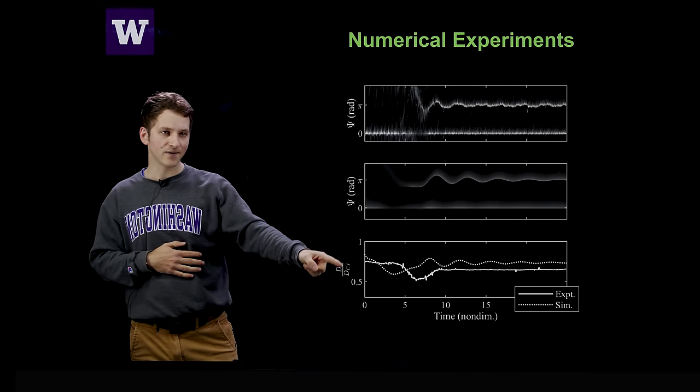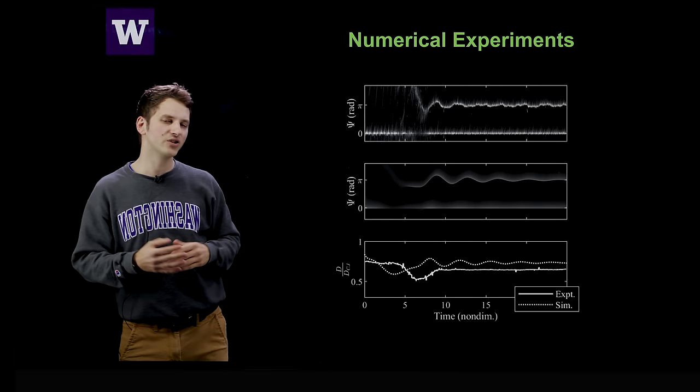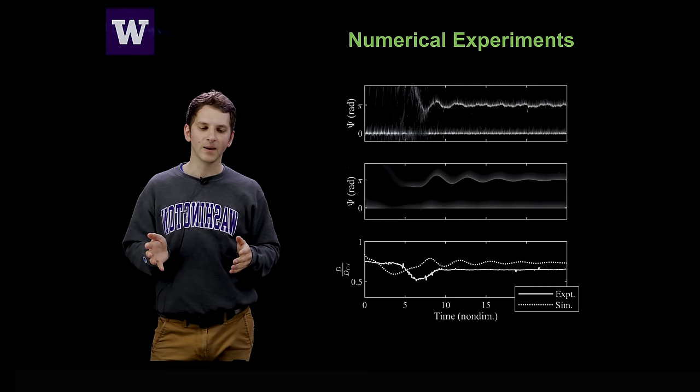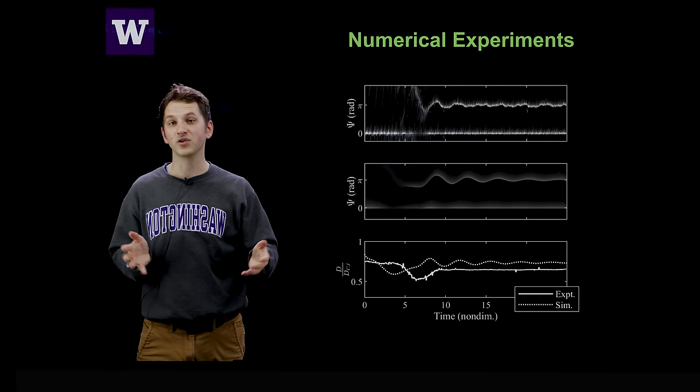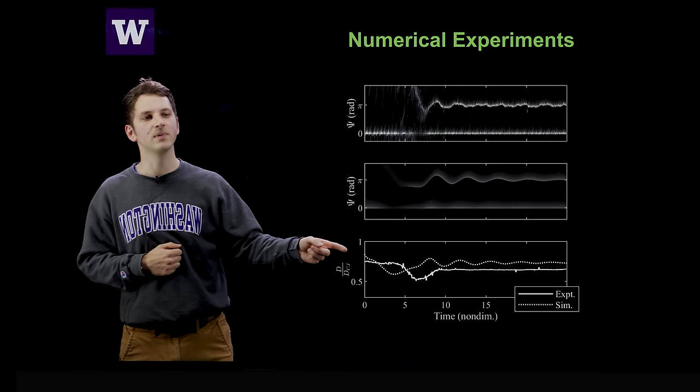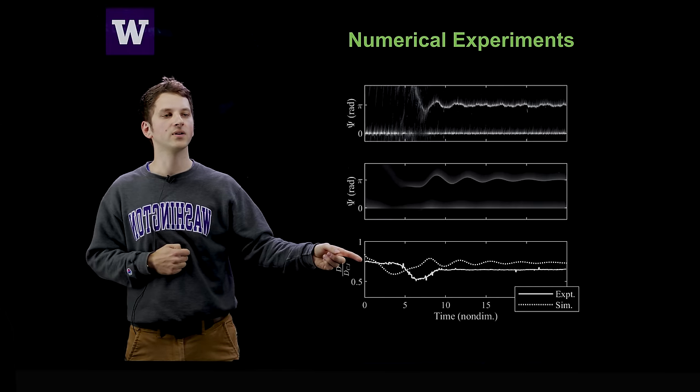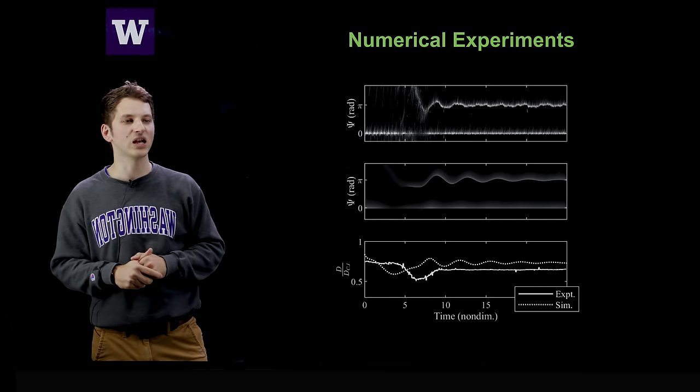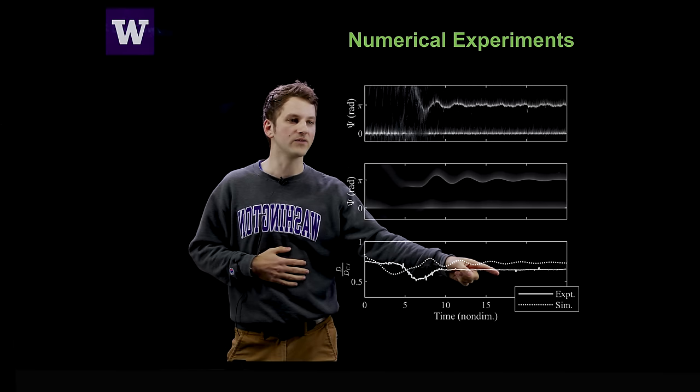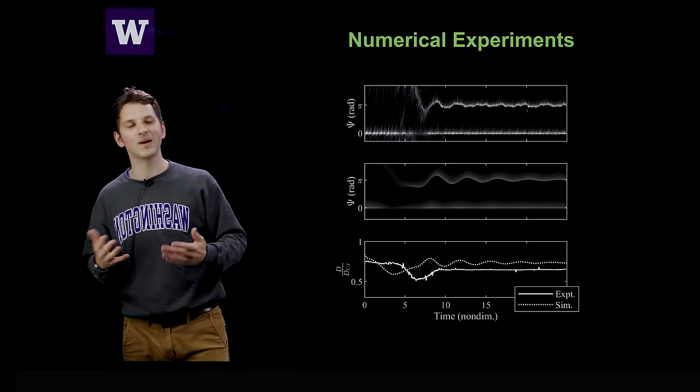In the bottom, I have here this fraction d over d_CJ. This corresponds to the fraction of wave speed related to the Chapman-Jouguet speed. So this is essentially saying that prior to wave nucleation, I have a certain speed, call it around 75% of the Chapman-Jouguet speed. But after wave nucleation, my speeds decrease in both experiments in the model by about 10%.